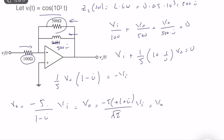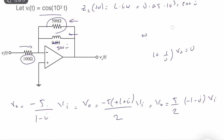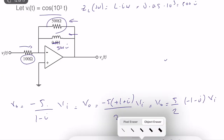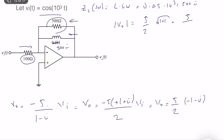So we find that Vo equals minus 1 minus j times Vi, divided by 2. Vi is a pure cosine signal, so in the phasor domain Vi is simply 1. The magnitude of Vo is equal to 5 divided by 2 times the magnitude of minus 1 minus j, and the magnitude of minus 1 minus j is equal to the square root of 1 plus 1, so it is equal to 5 divided by the square root of 2.